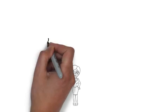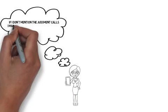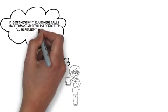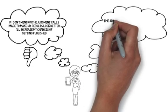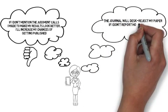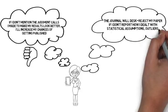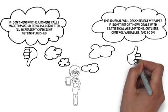These easy-to-implement recommendations change the researcher's motivation from not mentioning the decisions and judgment calls I made make my results look better, which will likely enhance my chances of publishing, to reporting results of assumptions of statistical models, how I dealt with outliers, and results with and without control variables is required if I am to publish my paper. Not doing so will result in my paper being desk rejected.